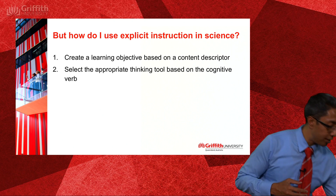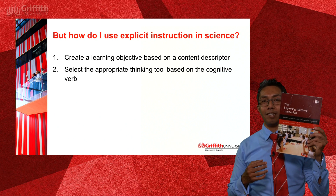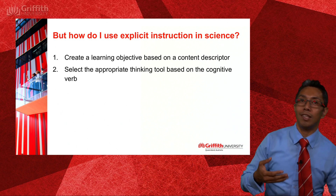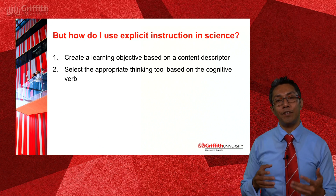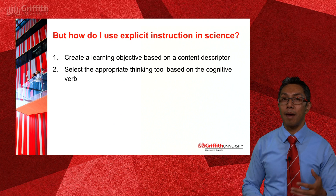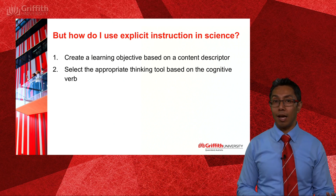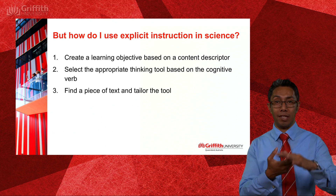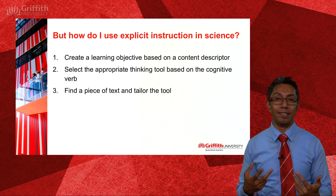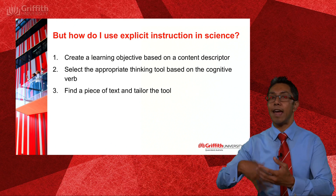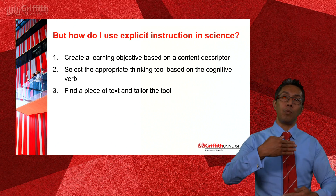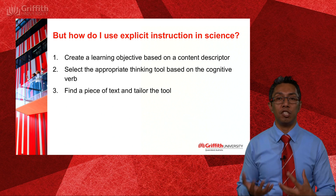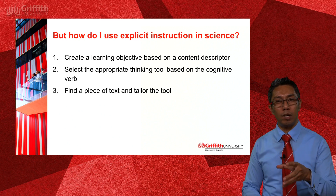Using your course text — the Beginning Teacher's Companion — this actually maps cognitive verbs to thinking tools for you. For example, if you are going to have students compare and contrast, then your go-to tools will be a Venn diagram or a double bubble. Once you have your learning objective and your thinking tool, it's time to find a piece of text and tailor it if it's age-inappropriate. Whether you choose the tool before the text or the text before the tool will change from situation to situation — the ordering really doesn't matter. What is more important is that you have your learning objective.